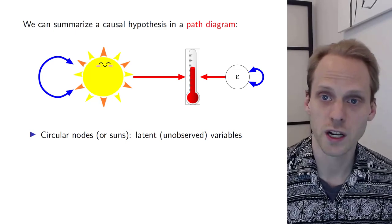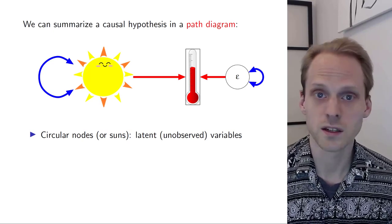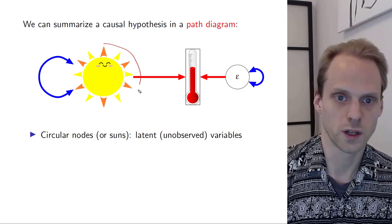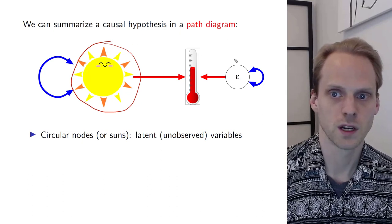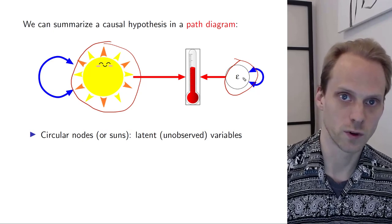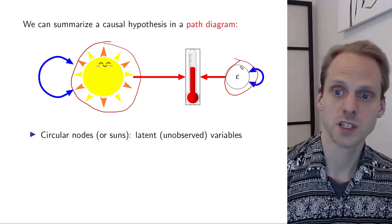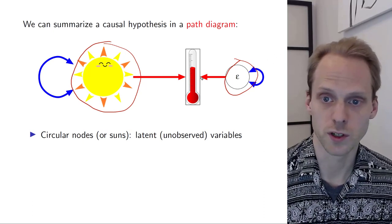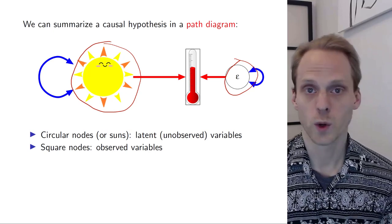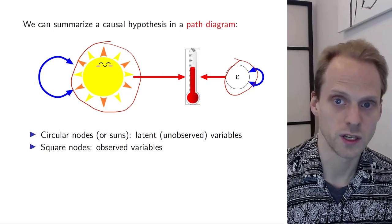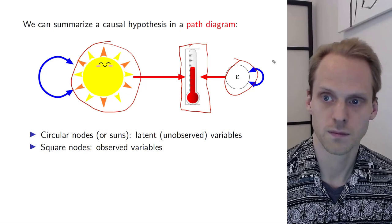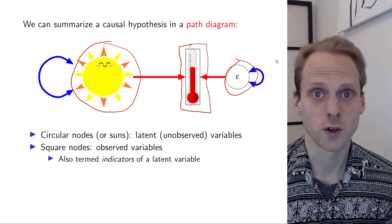In this path diagram, we represent latent variables — things we do not observe — with circles, or in this case a sun. So here we have one latent variable, which is the actual true temperature. We have a second and third, but this thing is the latent variable as well, which is what we call a residual or a measurement error. These are deviations on the thermometer that are not due to the actual underlying latent variable. Square or rectangular nodes indicate observed variables. In this case, we have one observed thermometer. These are also called indicators of the latent variable.